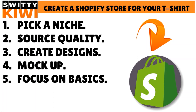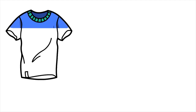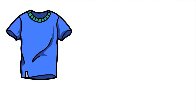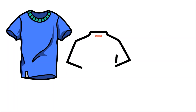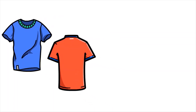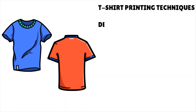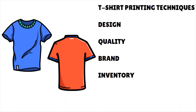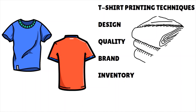Number five, you want to focus on basics. It's very important that every business — whether it's a t-shirt business or a regular business — you need to think about some basics. There are five considerations when starting a t-shirt business: t-shirt printing techniques, design, quality, brand, and inventory. Let me repeat that — t-shirt printing techniques, design, quality, brand, inventory. Those five elements are very important.